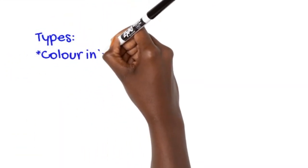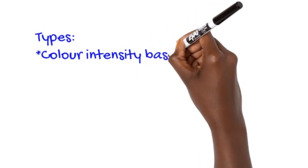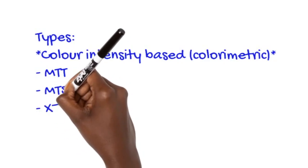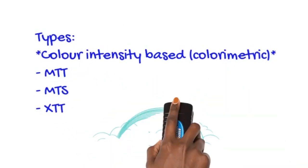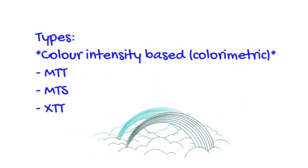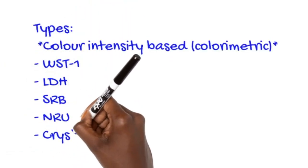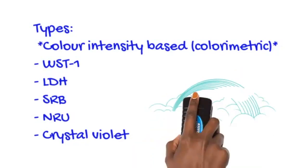Then there are color intensity-based, colorimetric assays, in the sense that you're measuring color intensity. These include tests like MTT and variations of MTT called MTS, XTT — related to solubility — WST-1, LDH (lactate dehydrogenase), SRB, NRU, and crystal violet. These are all colorimetric assays.